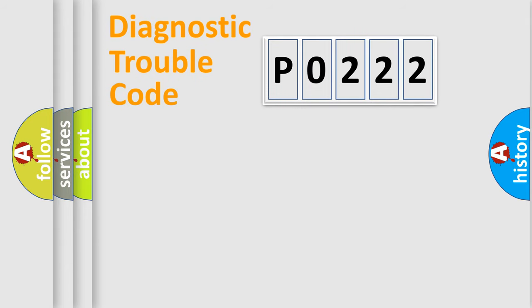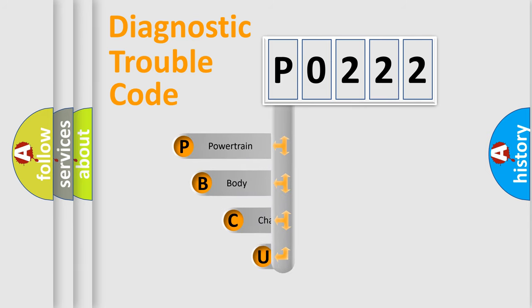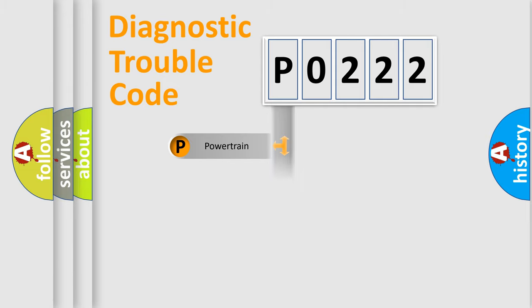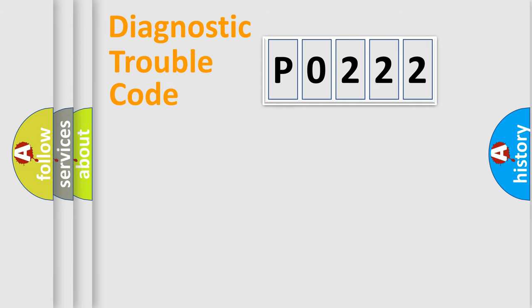First, let's look at the history of diagnostic fault code composition according to the OBD2 protocol, which is unified for all automakers since 2000. We divide the electric system of the automobile into four basic units: powertrain, body, chassis, and network.